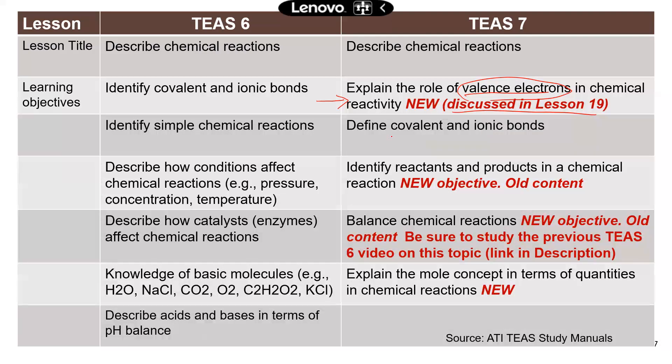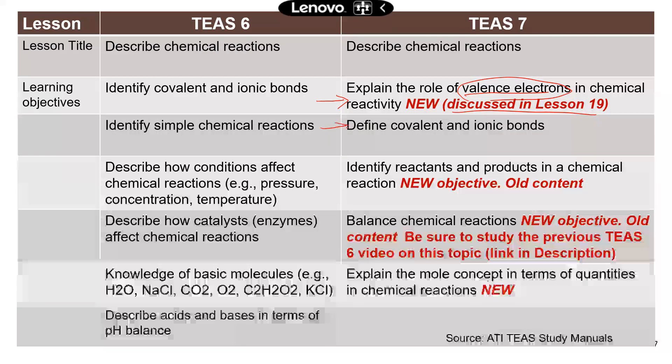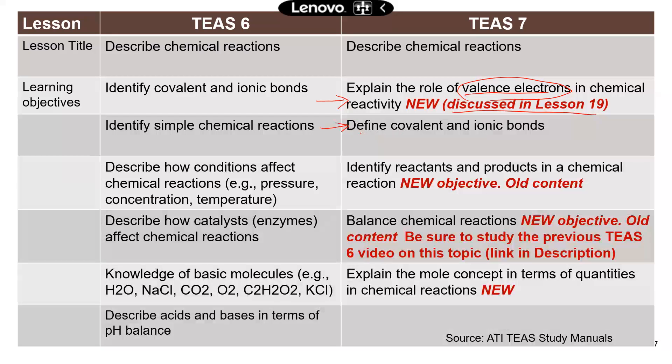Define covalent ionic bonds. And I have a lesson for TEAS 6 that covers this topic pretty well. So I would recommend that you watch that to get the basics. Now, this is a new objective, but don't worry. It was covered by 6. So we just need to kind of do a little recap, refresh your memory, and that's it. Very easy.